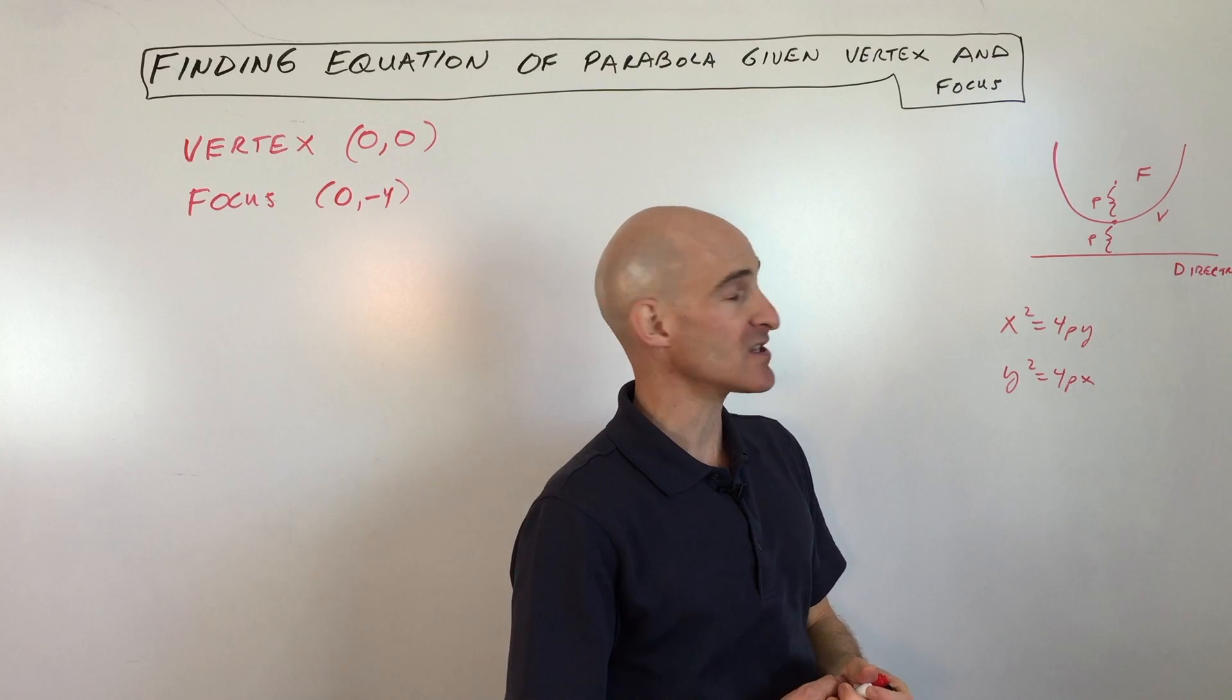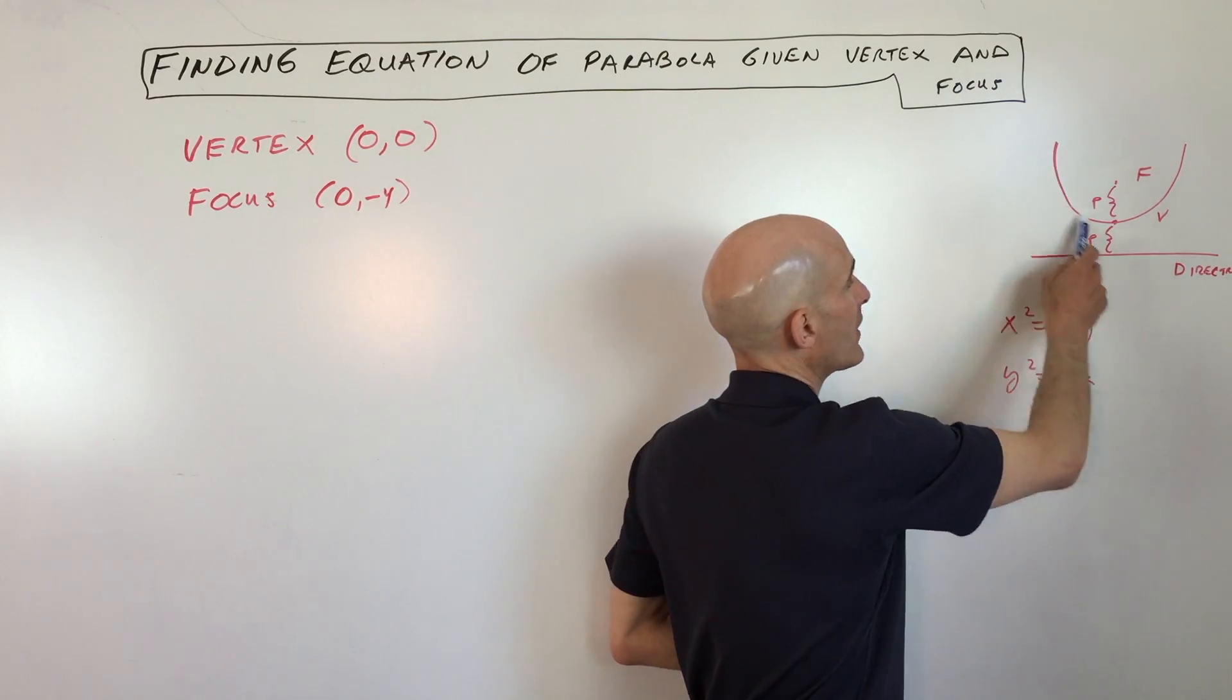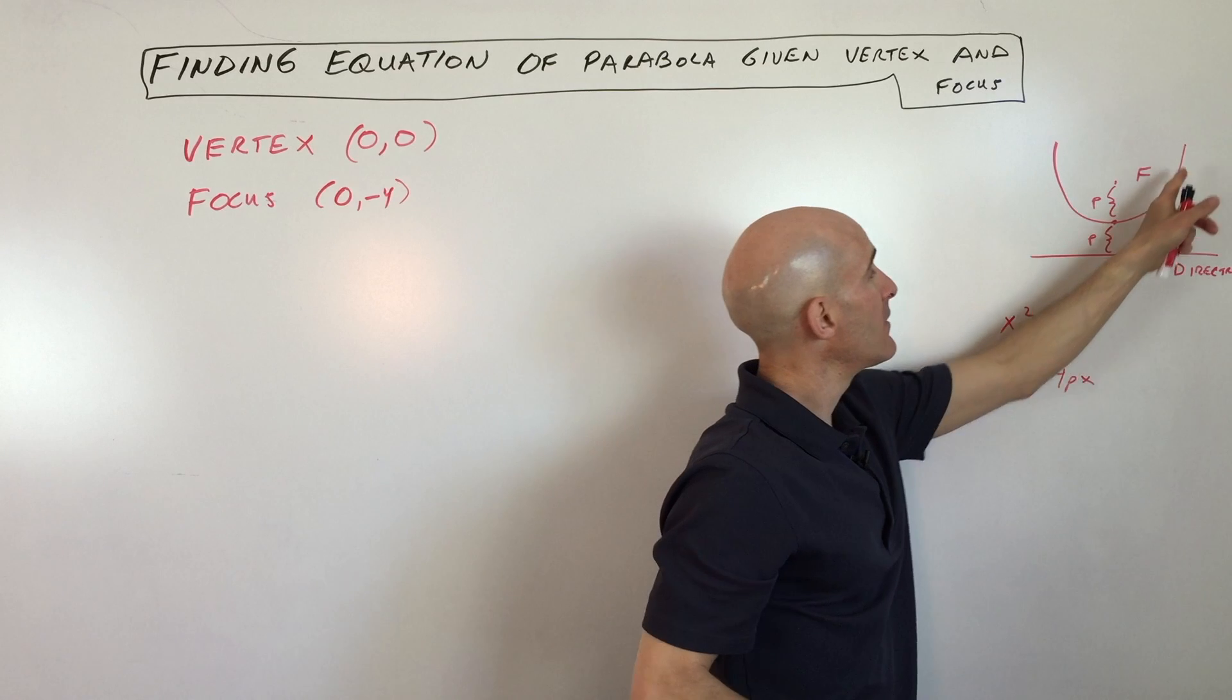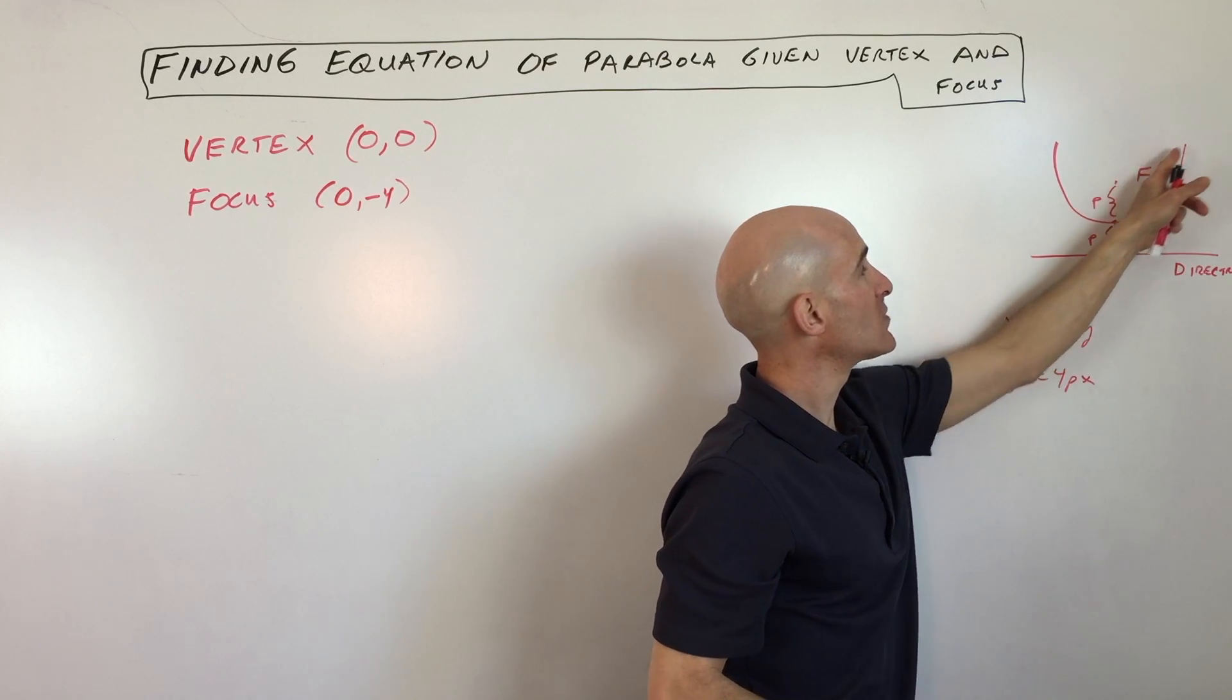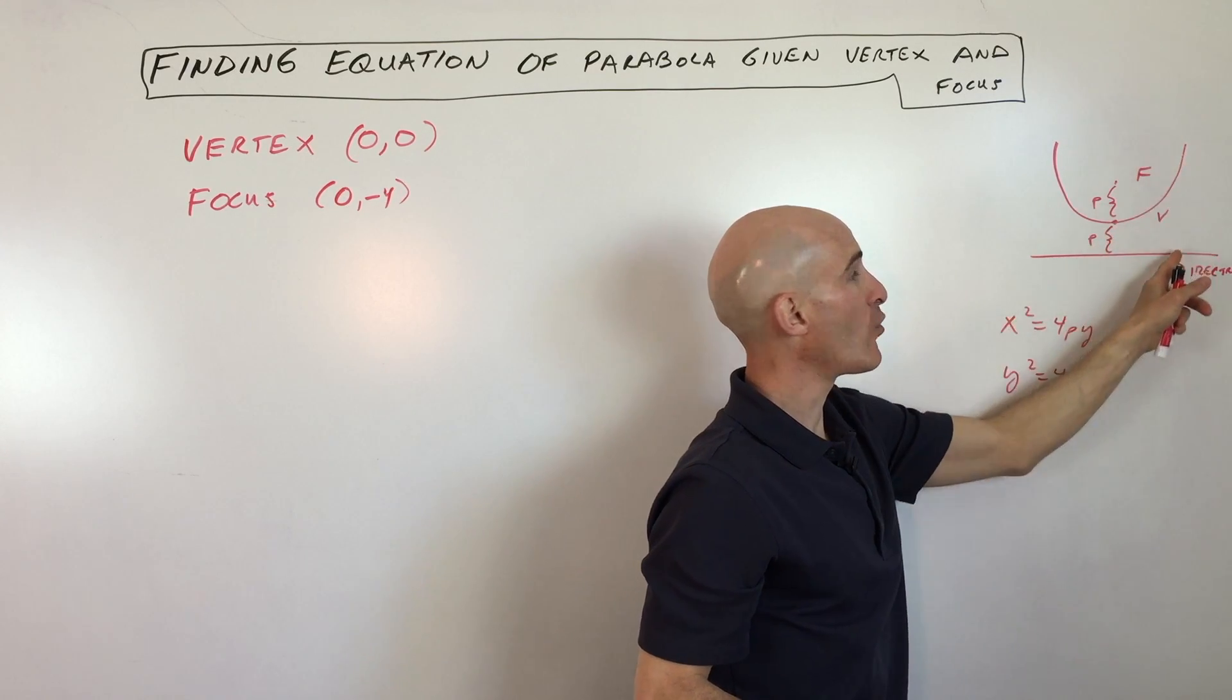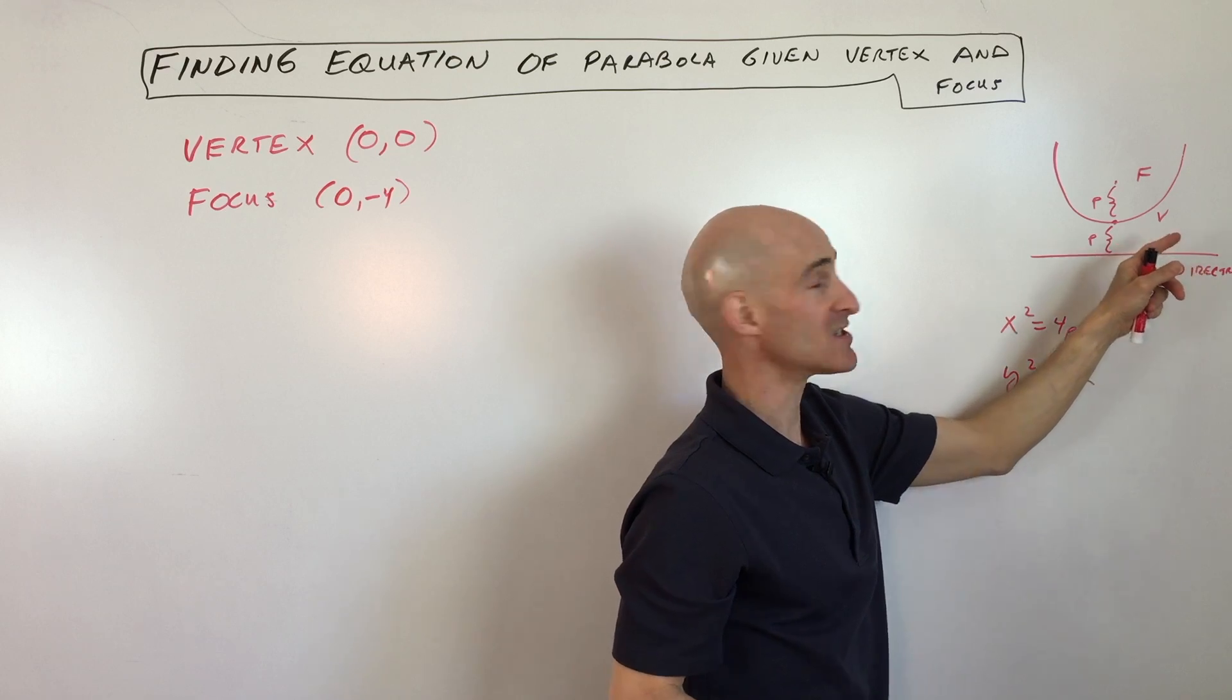That's the focal distance, and the basic idea is that if you pick any point along the parabola, the distance from that point to the focus will be the same as the distance from that point to the directrix, the shortest distance.